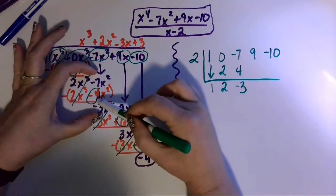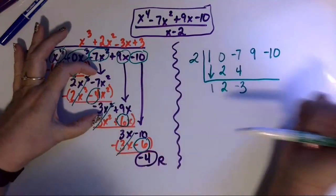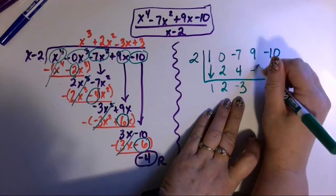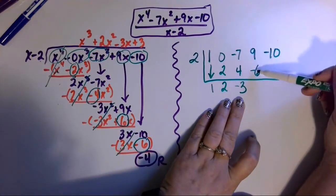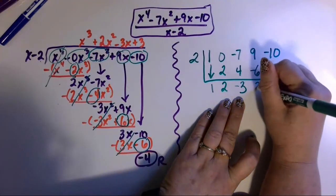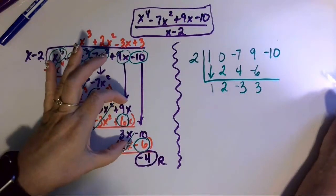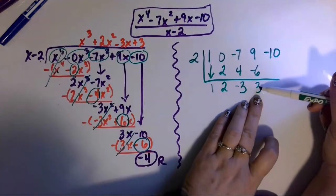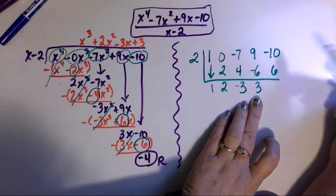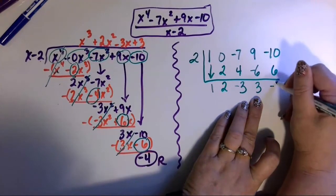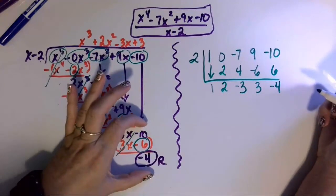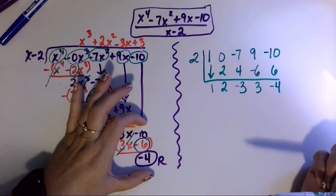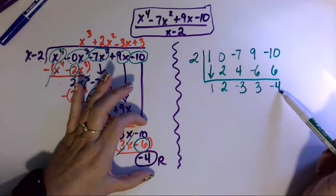Then I multiply negative 3 times 2 to get negative 6, and add: 9 plus negative 6 is positive 3. That matches the block showing 9 minus 6 equals 3. Then multiply 3 times 2 to get 6, and add: negative 10 plus 6 is negative 4. That corresponds to negative 10 minus negative 6 equals negative 4. So negative 4 is my remainder.